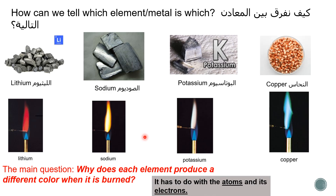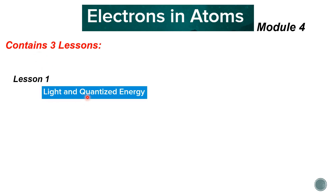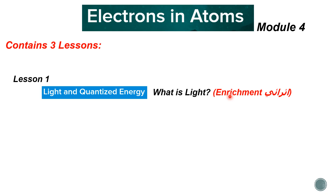To answer these questions and inquiries, we need to study the atom and the electrons, because it all has to do with atoms and electrons. That's our first module — it's called Electrons in Atoms, Module Four in your Inspired Chemistry book. It contains three lessons. Lesson number one talks about light and quantized energy, and answers the main question: what is light? I encourage you to read it — it's a very important part.